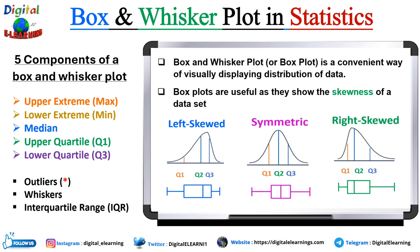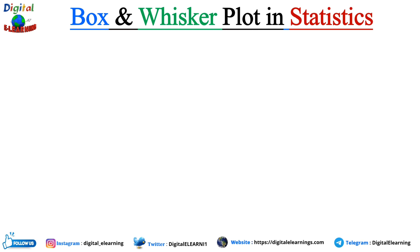If it is right-skewed, or positively skewed, the right whisker is longer than the left whisker. This means there are some higher values pushing the distribution tail to the right, and the median line inside the box is closer to the left side of the box. In short: if the box plot has a longer tail to the left it is left-skewed; if it has a longer tail to the right it is right-skewed.